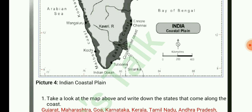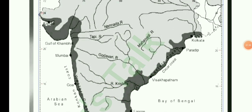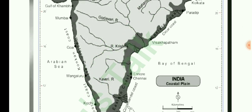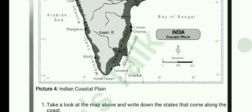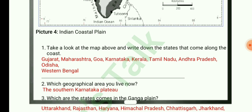This is about the Indian Coastal Plain. Coastal Plains can be divided into 2: the Western Coastal Plain and the Eastern Coastal Plain. Looking at the map for states that come along the coast, we can write: Gujarat, Maharashtra, Goa, Karnataka, Kerala, Tamil Nadu, Andhra Pradesh, and West Bengal.